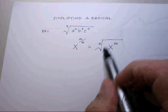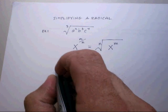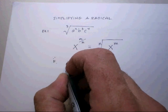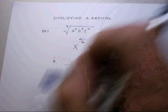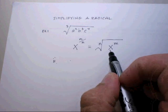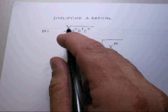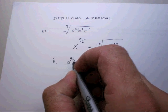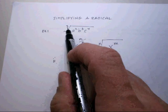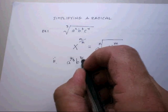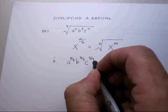So if I were to compare this to this up here, I would have x. What I would have, if I wanted to change this to the exponent notation, I would say a to the 2 over 3, I would say b to the 3 over 3, and I would say c to the 4 over 3.